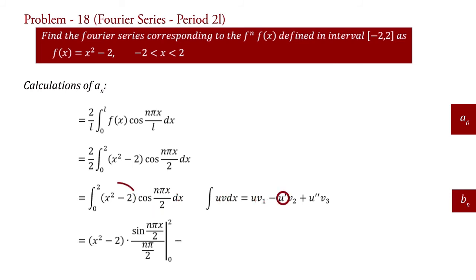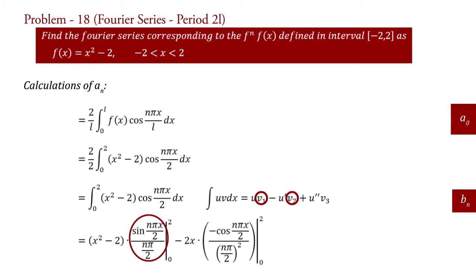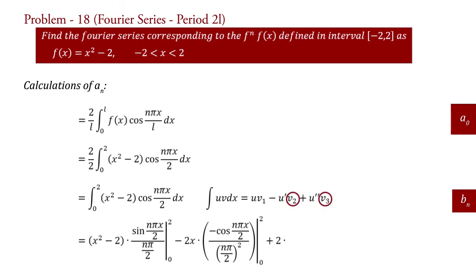Minus u dash, that is differentiation of x square minus 2 which is 2x, into v2, that is integration of v1: integration of sin n pi x upon 2 upon n pi by 2. So we write here minus cos n pi x upon 2 upon n pi by 2 squared, with limit 0 to 2. Plus u double dash, that is differentiation of 2x which is 2, into v3, that is integration of v2: integration of minus cos n pi x upon 2 upon n pi by 2 squared. So we put minus sin n pi x upon 2 upon n pi by 2 cubed, with limit 0 to 2.